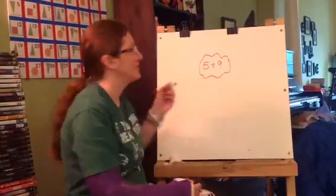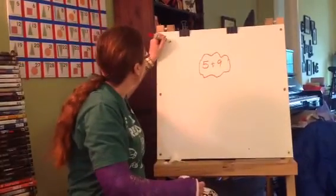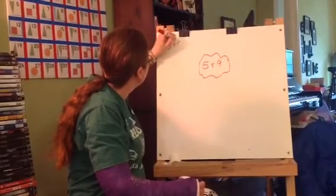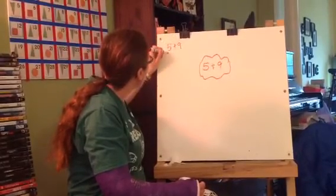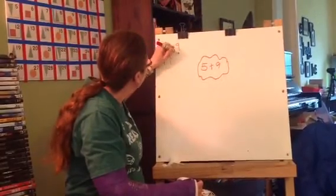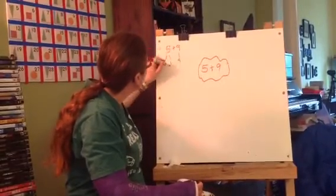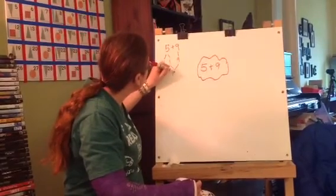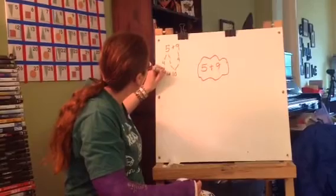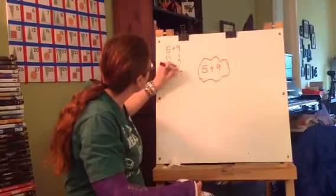Okay, ready? Alright, if I do... oh, I almost draw my 5 backwards. If I do 5 plus 9 and I split my 5 into 4 and 1 and I bring my 9 down, 9 plus 1 is 10. And then I can bring my 4 down. 4 plus 10 equals 14.